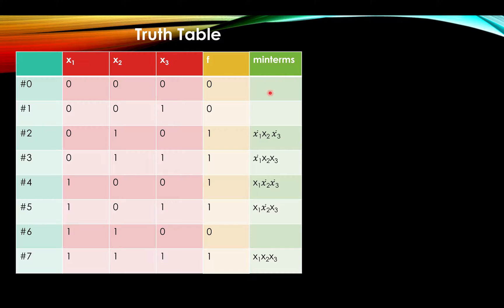So with that, we could write our minterms, which is, in this row: not x1 x2 not x3, not x1 x2 x3, x1 not x2 not x3, x1 not x2 x3, and x1 x2 x3.